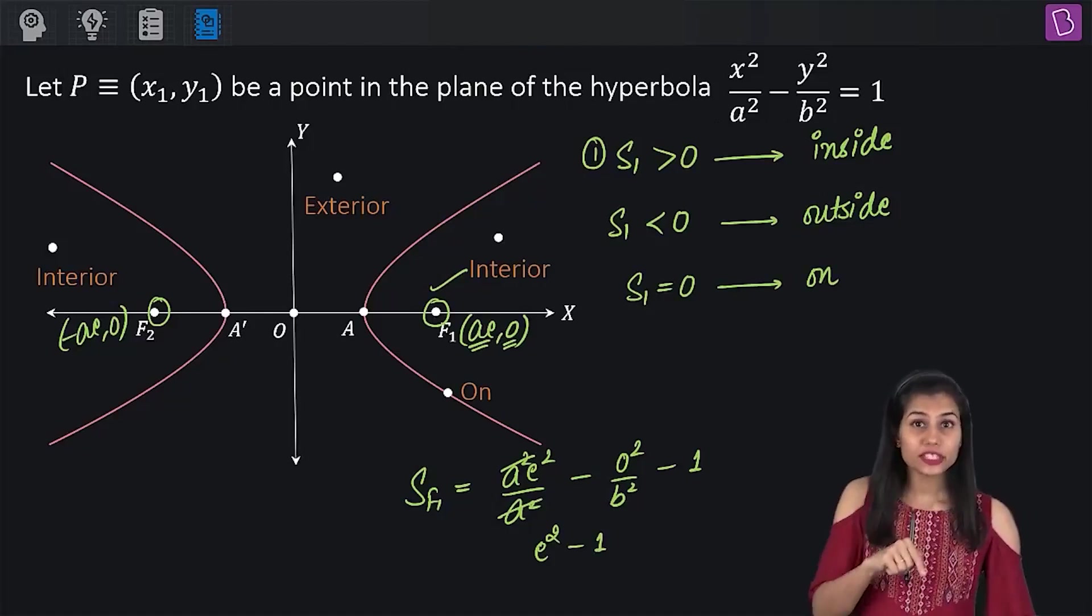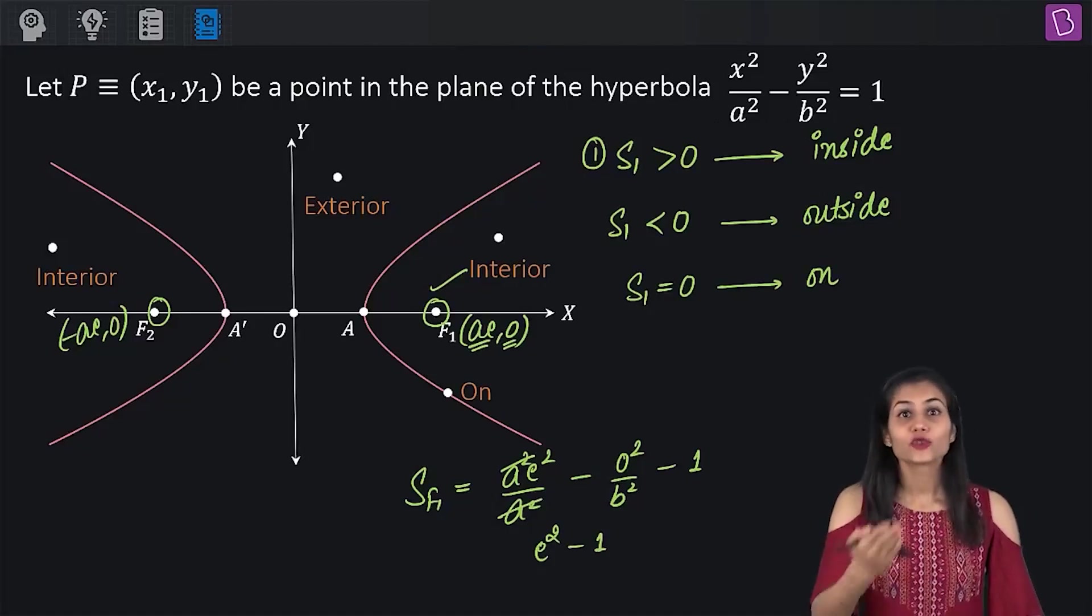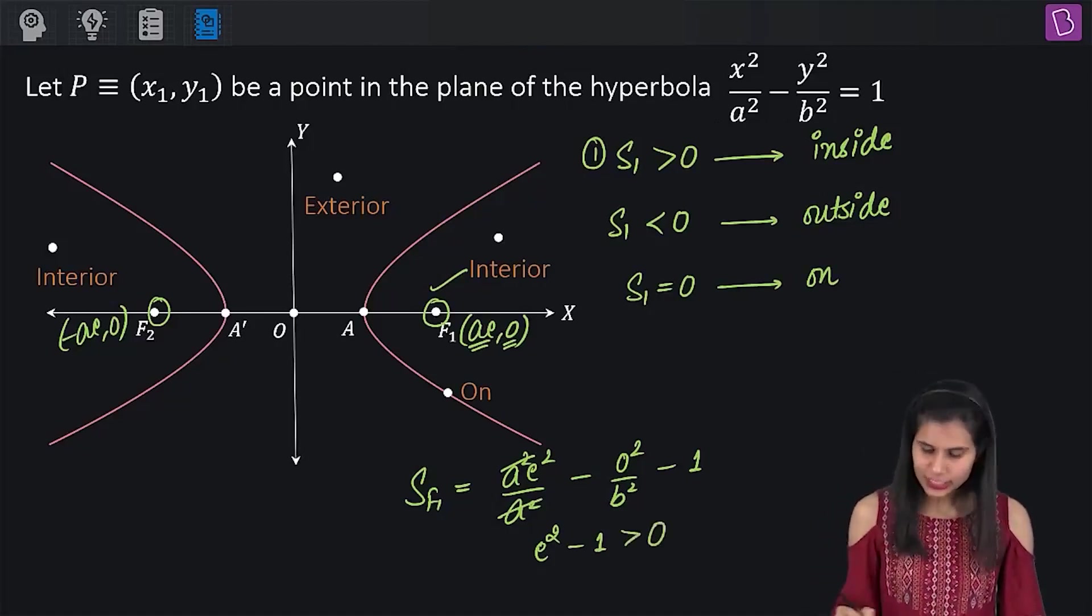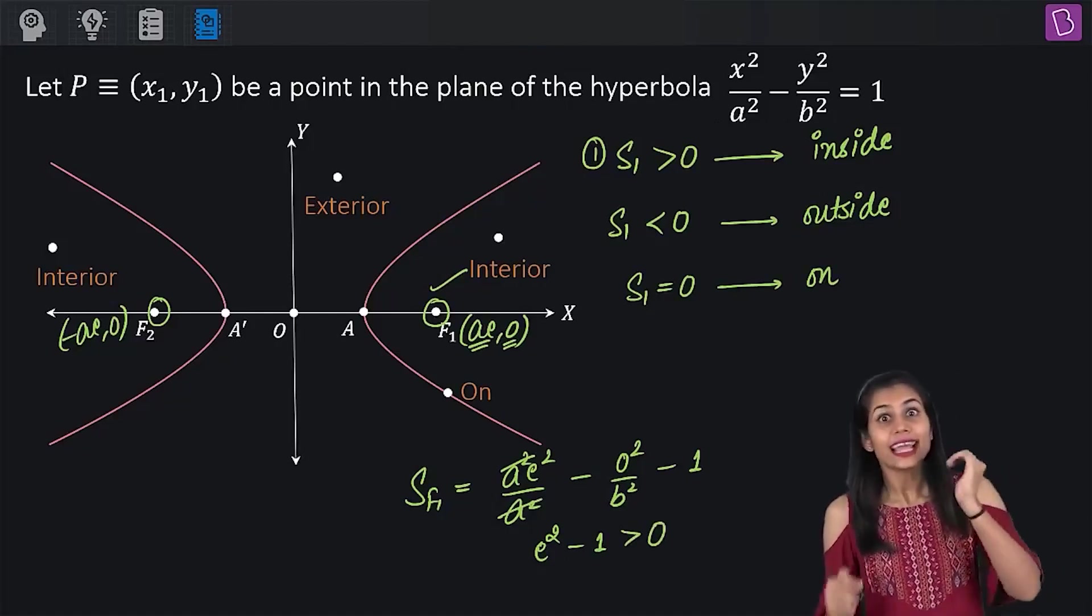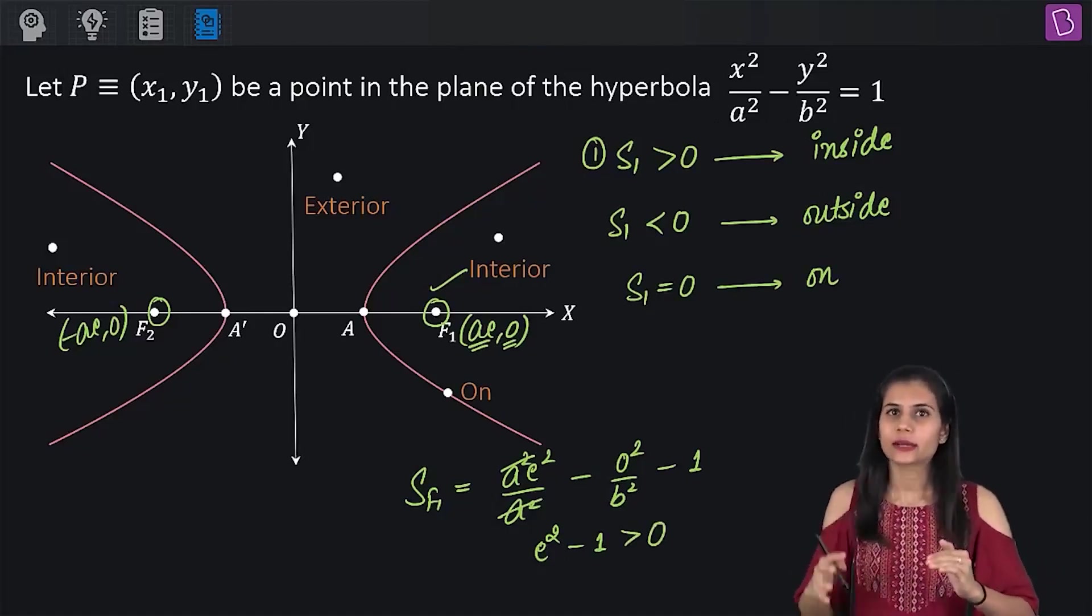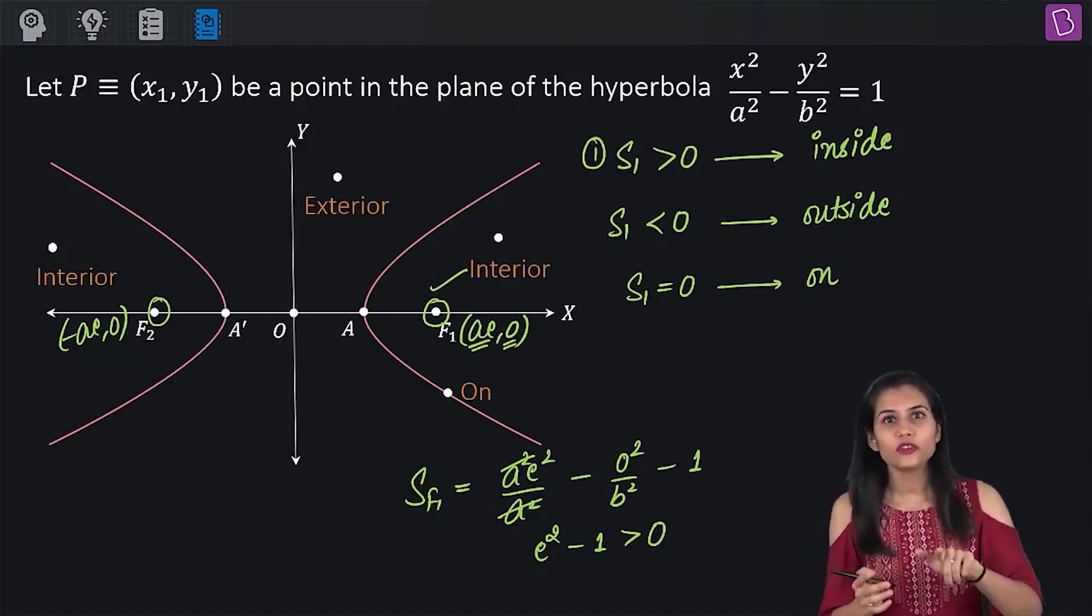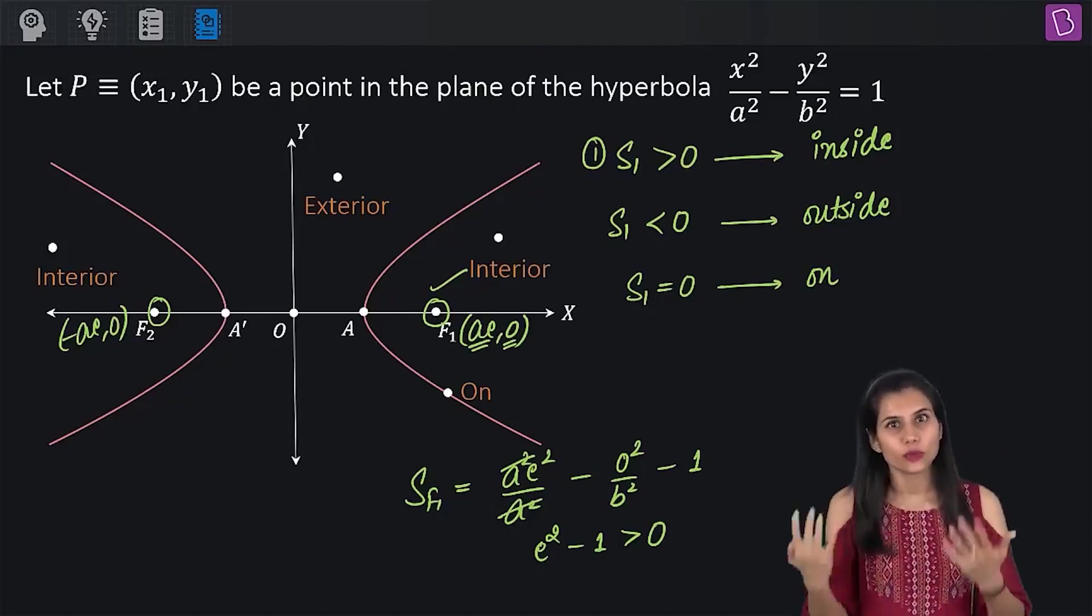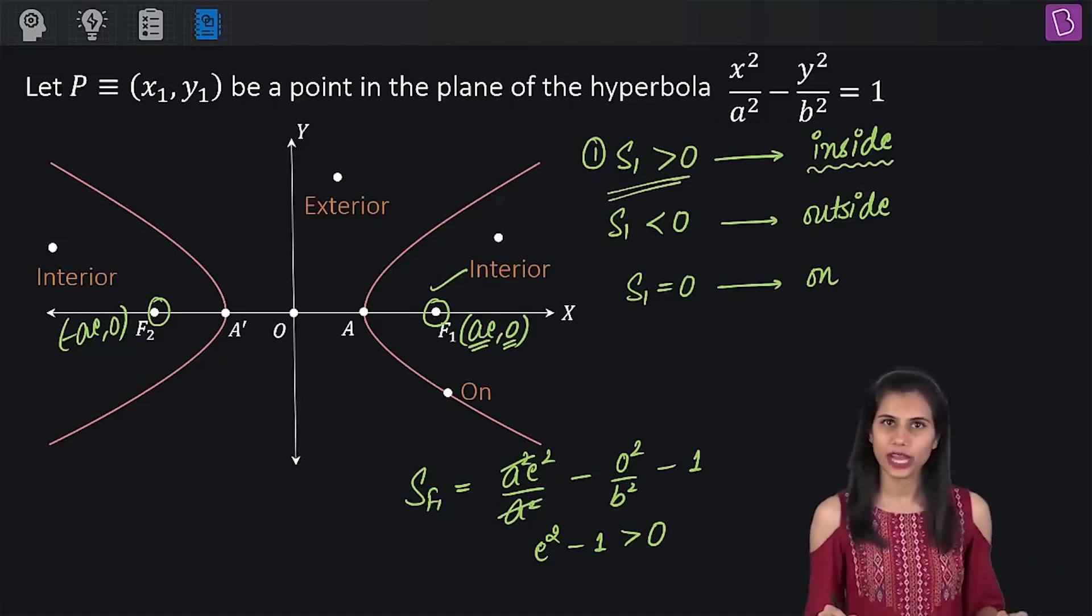Remember, e is the eccentricity of the hyperbola which is greater than 1. So e squared is also greater than 1. So obviously, e squared minus 1 will be as expected positive. Because the value of S at an interior point F1 is coming out to be positive, you can definitely conclude that the value of S at any interior point will be positive and hence, S1 greater than 0 will give you the region sitting inside the hyperbola.